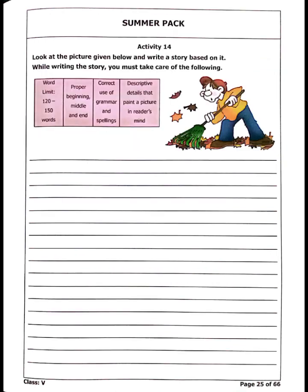In Activity 14, look at the picture given below and write a story based on it. While writing the story, you must take care of the following hints. In the picture, you can see that a boy is cleaning the environment, so you have to write a creative paragraph on cleanliness of your environment. The next page is also used for this paragraph.